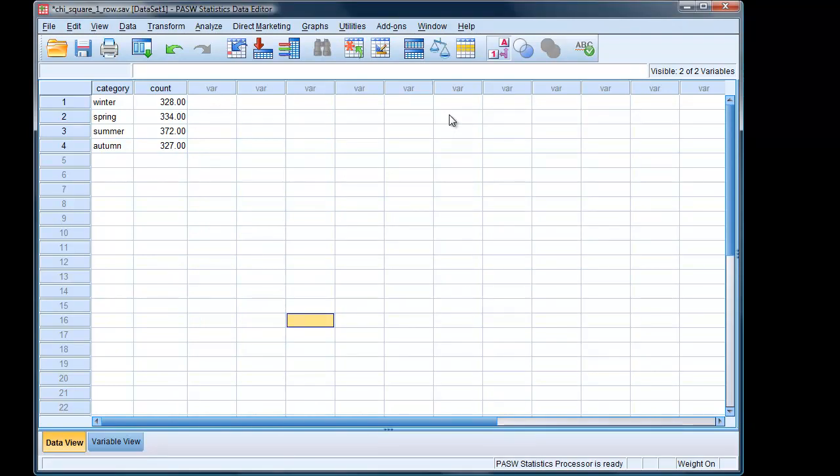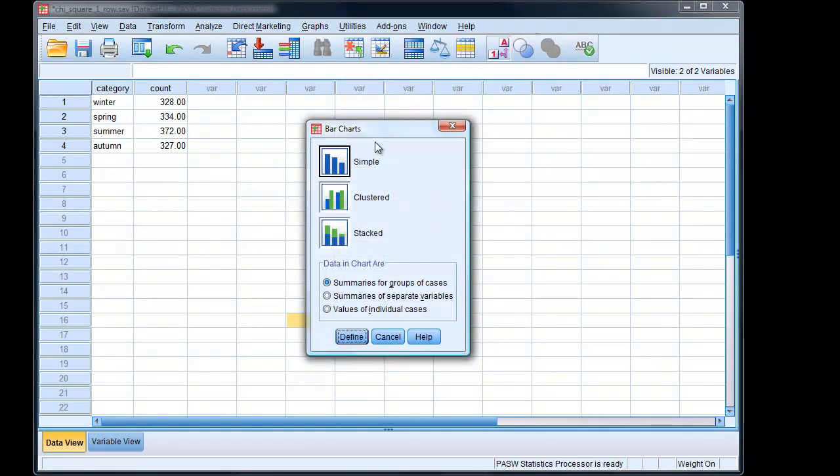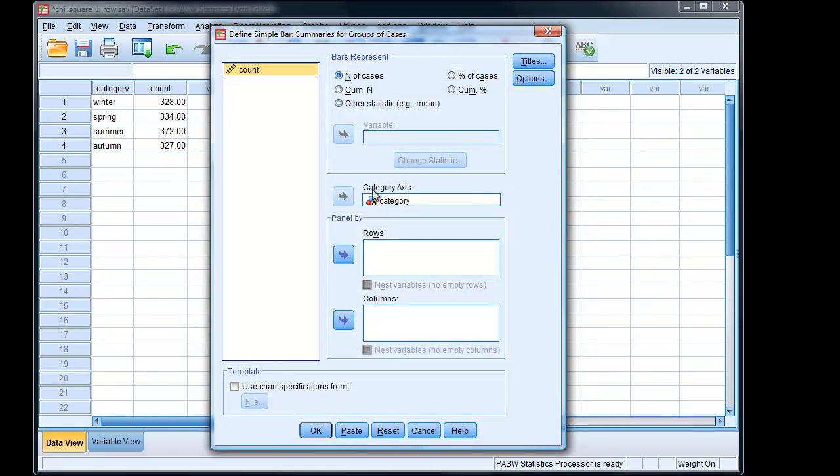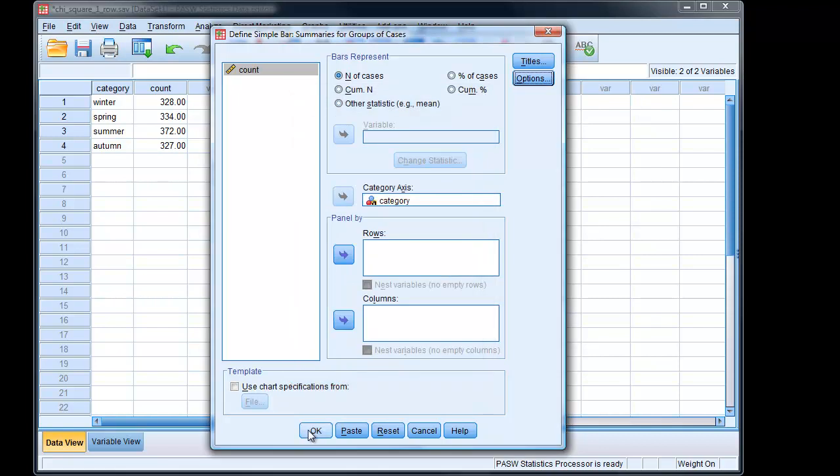So in contrast to the analysis I've covered before, I'm going to this time draw the graphics first to give us some idea what is going on. So it's graphics, legacy dialogues, bar, simple bar chart, summaries for groups of cases, click define. Then the category axis is category. And we want a number of cases in each category, which we have four seasons of the year. So we've asked it to display error bars, we've asked for confidence intervals to be shown in that particular type of error bar. We're asking for 95% confidence intervals. Click continue. OK.